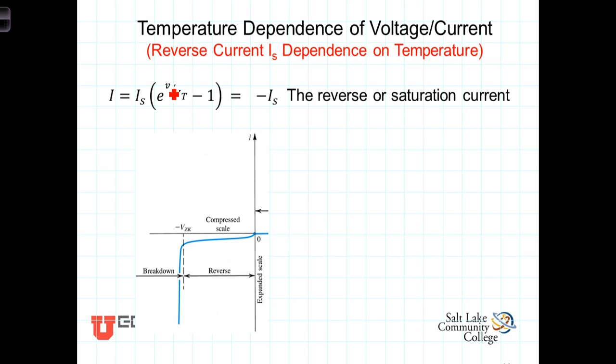when V becomes negative, we have E to the minus exponent, and for any significant voltage here, this term then goes to zero, and the current through the diode is approximately equal to I sub S.